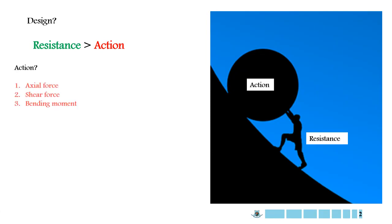Now that you have the general idea of actions and resistance, we will see from the point of view of a structure. In general, there are three kinds of actions: axial force, shear force, and bending moment, which you are learning to calculate in structural analysis courses. Action varies from member to member. For example, in beam, there is not much axial force, so we ignore axial forces in beam. Beam is designed for shear force and bending moment only. On the other hand, columns are designed for axial force mainly, and sometimes there is bending moment as well. In this course, we will not cover the design of column, so we will discuss everything from the point of view of a beam.